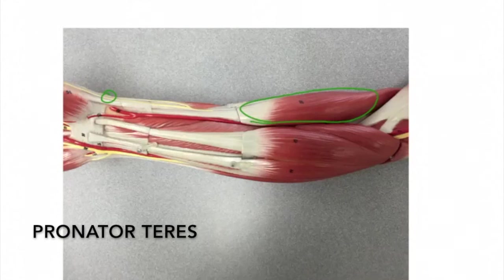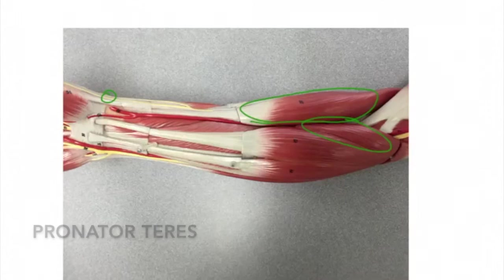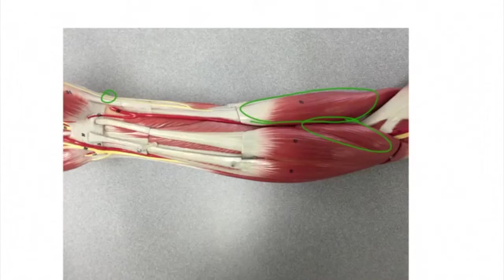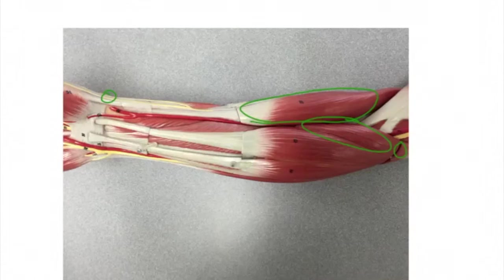Here we can see the pronator teres. The origin is at the medial epicondyle of the humerus, and the insertion is the middle lateral surface of the radius. The action is to pronate the forearm.